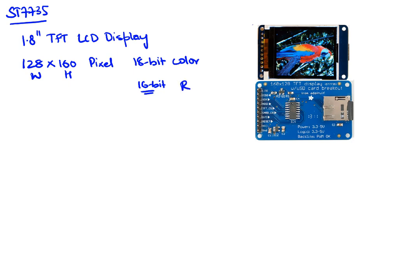Because we're using 16-bit color, the red, green, and blue values will be represented as follows: since 16 is not evenly divisible by 3, we will use 5 bits for red, 6 bits for green, and 5 bits for blue. The reason for giving green more bits is that our eyes are more sensitive to green than they are to red and blue.